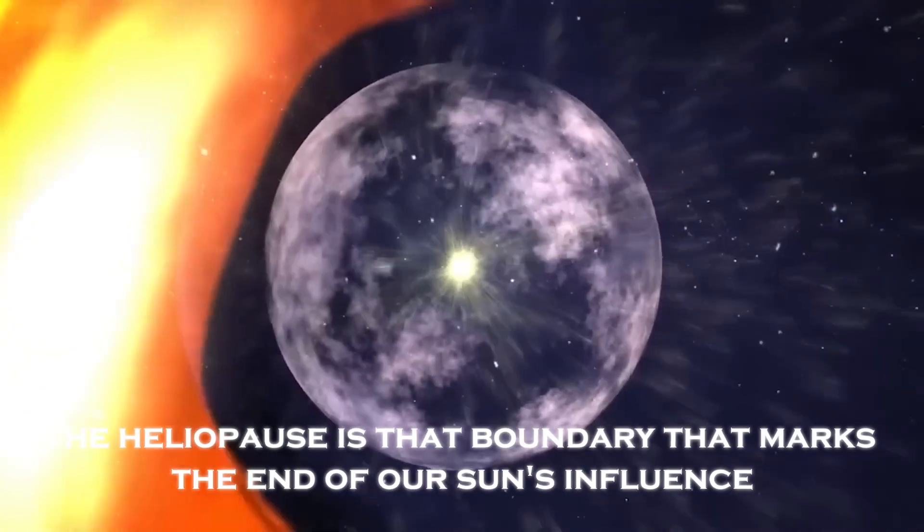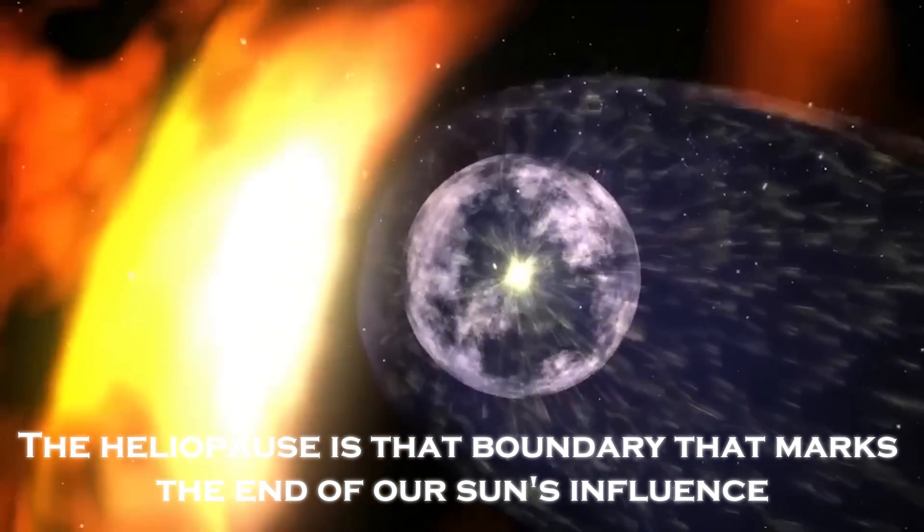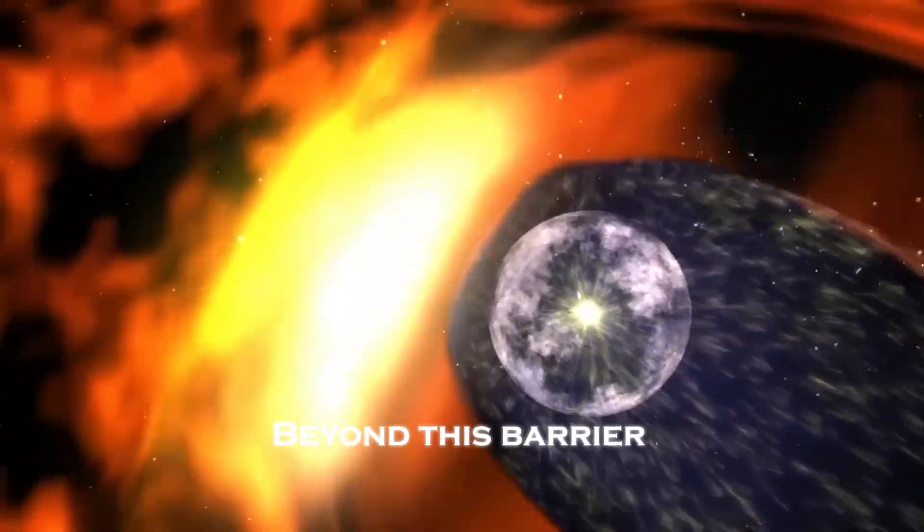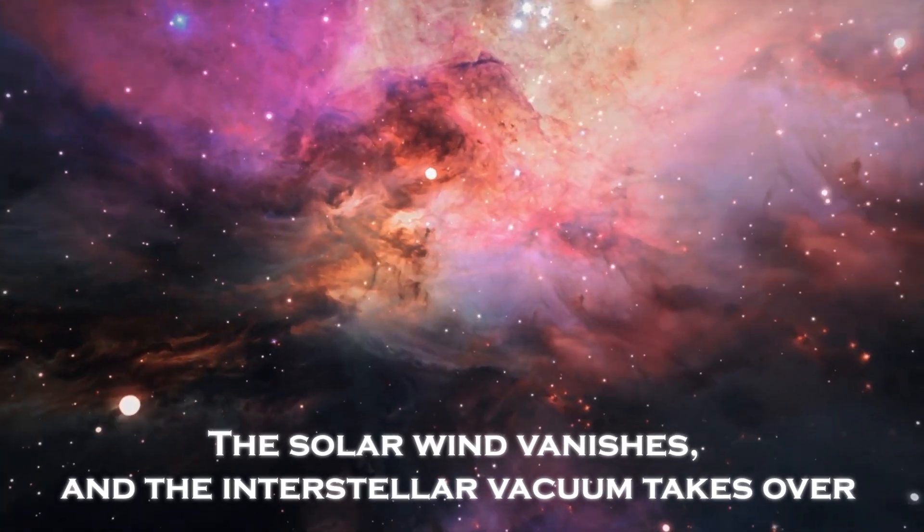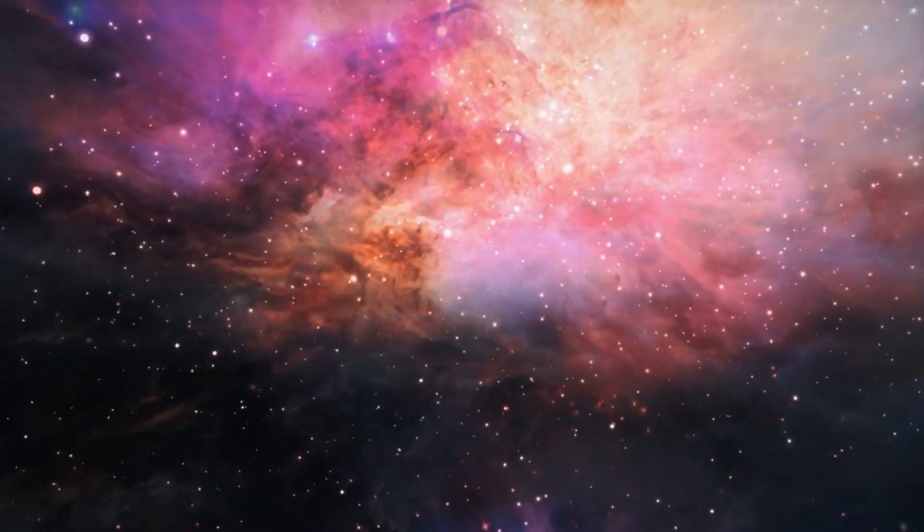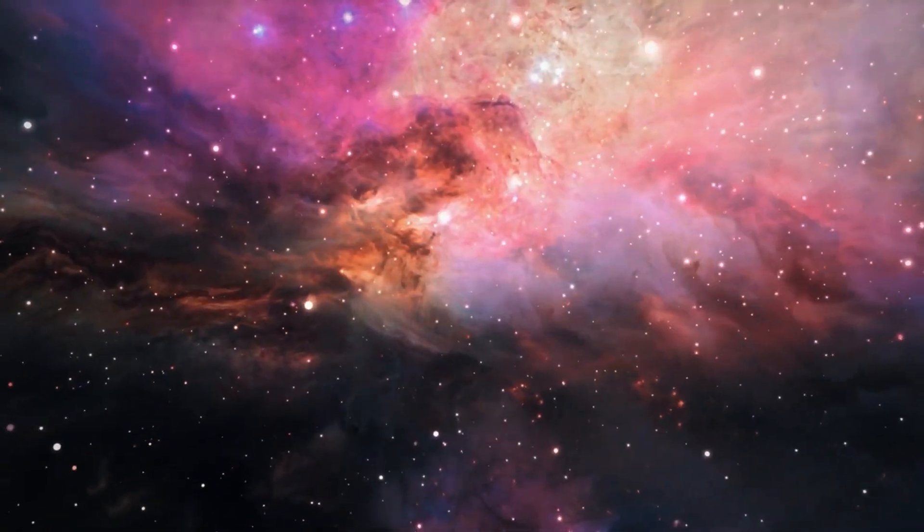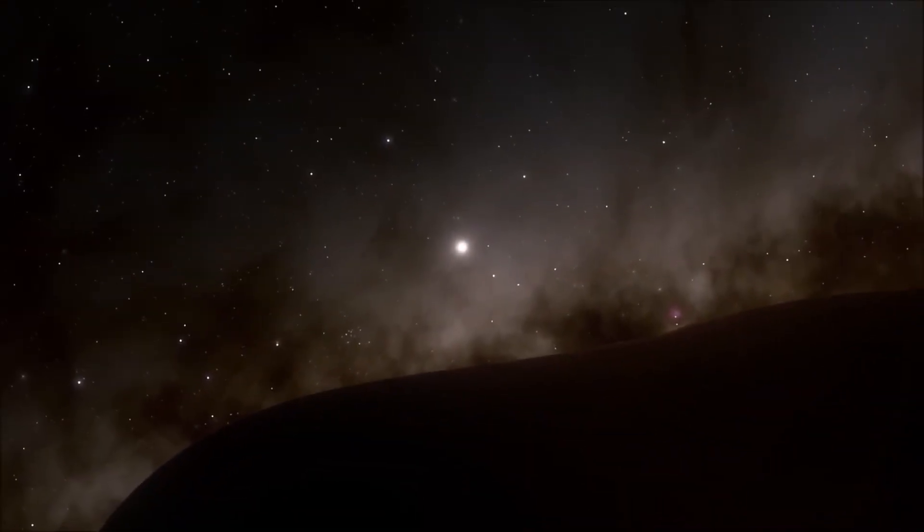The Heliopause is that boundary that marks the end of our sun's influence. Beyond this barrier, the solar wind vanishes and the interstellar vacuum takes over. But what does it really mean to cross this boundary? What lurks on the other side?